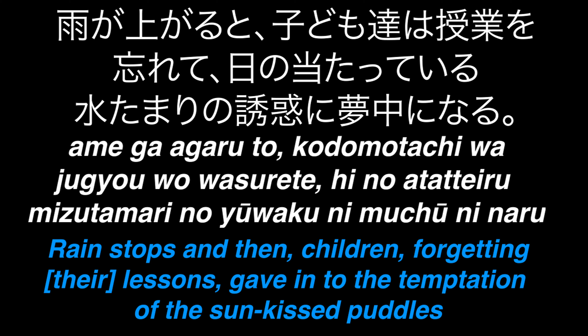Now that we've dissected the whole sentence, we can say in English it'd be: rain stops, and then children, forgetting their lessons, give in to the temptation of the sun-faced puddles. So that's all for today. My next video will be about what the impact on language would be if the British Empire never existed. Thank you for watching, and have a nice day.